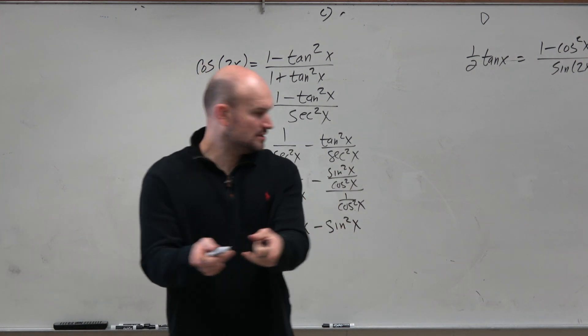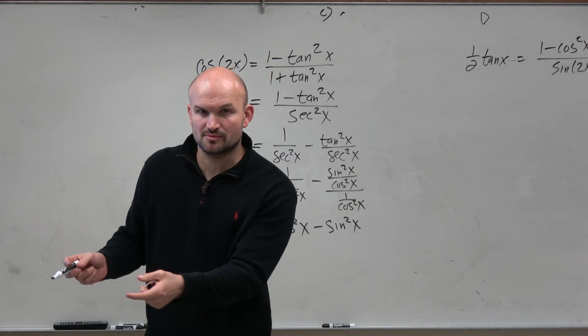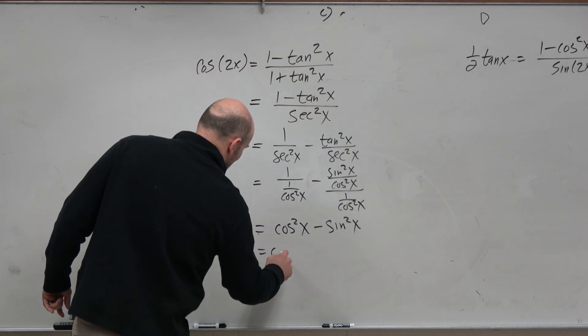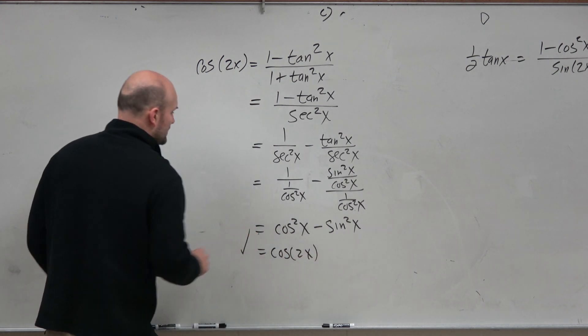And based on our formula, cosine squared of x minus sine squared of x is equal to cosine of 2x. Not 1. Cosine of 2x. There you go.